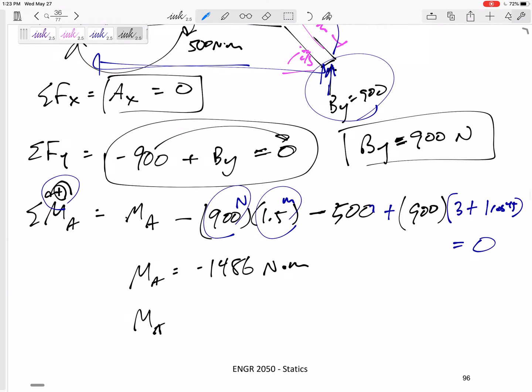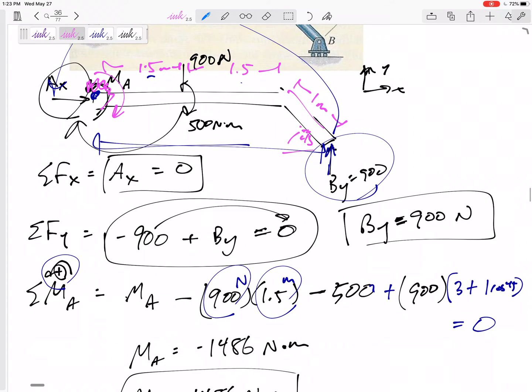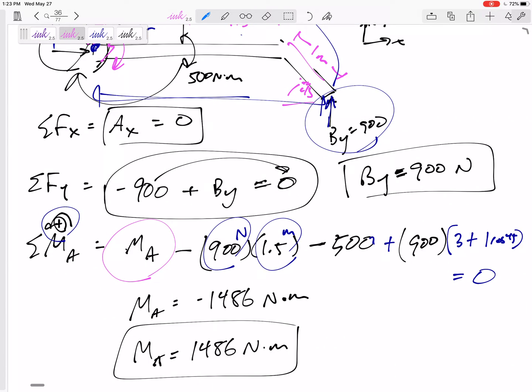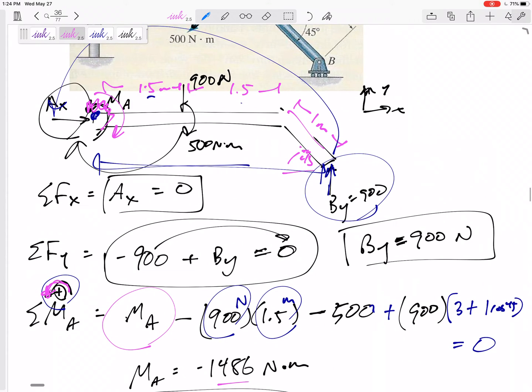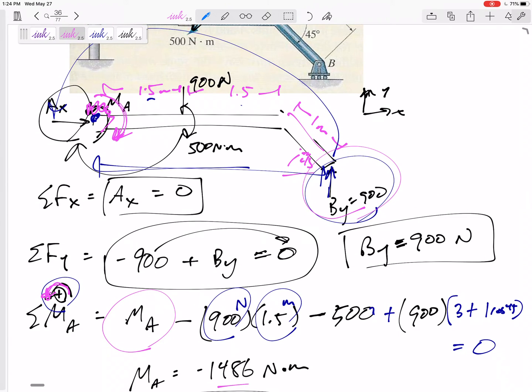So this is what I want you to do. MA is 1486 Newton meters. Box that in and come back up here and show me it's actually going that way. It's going clockwise. And I prefer you not to erase what you guessed first completely. Draw a squiggly line. Show me that you had guessed the wrong direction. So that when I'm going through your work, I'm saying, oh, that makes sense that he guessed it in the counterclockwise direction. It came out negative. So it's actually in the clockwise direction. So there we go. There's your answer. AX is equal to zero. BY is positive 900 drawn that way. And MA is positive 1486 drawn that way.